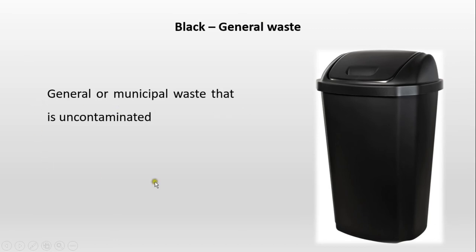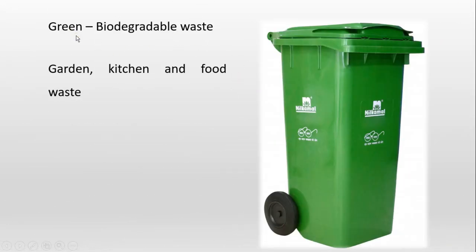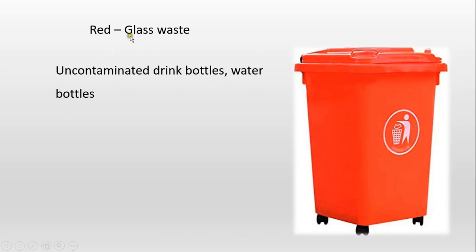Uncontaminated general or municipal waste is discarded into black color bins. Green color is for biodegradable waste. Under this category we take garden waste, kitchen waste, and food waste. This biodegradable waste should be discarded into green color bins.